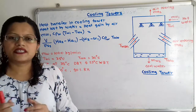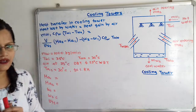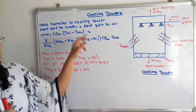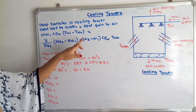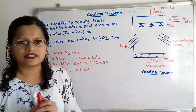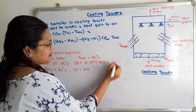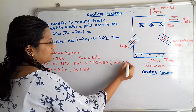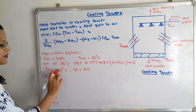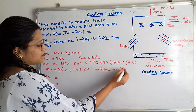To use the psychrometric chart, we first plot point 1 for the initial condition of air and point 2 for the final condition of air. From point 1 we find specific volume, enthalpy, and specific humidity. From point 2 we find specific humidity and enthalpy. The initial condition is 35°C dry bulb and 25°C wet bulb temperature. The final condition is 30°C dry bulb temperature and 90% relative humidity.